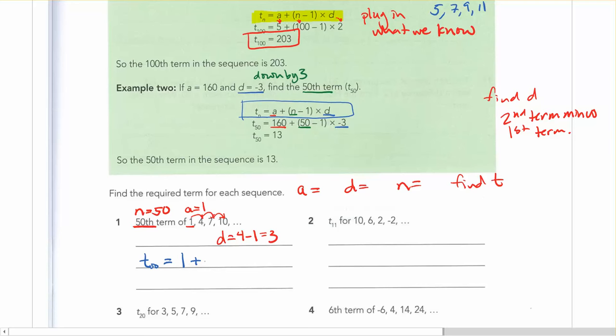a equals 1 plus bracket, n in this case is 50, minus 1 bracket, and then times by 3. So there I've got all the information that I need.